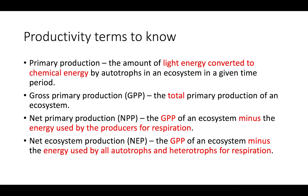Net ecosystem production is the gross primary production of an ecosystem minus the energy used by all autotrophs and heterotrophs for respiration. With net primary production, we are only subtracting the energy used by the producers for respiration.